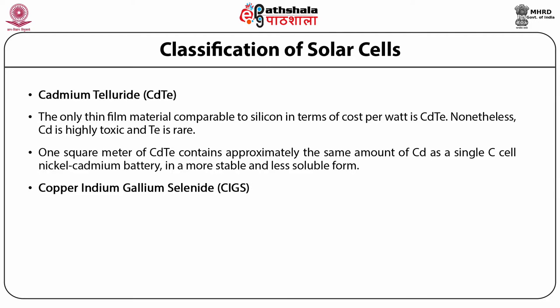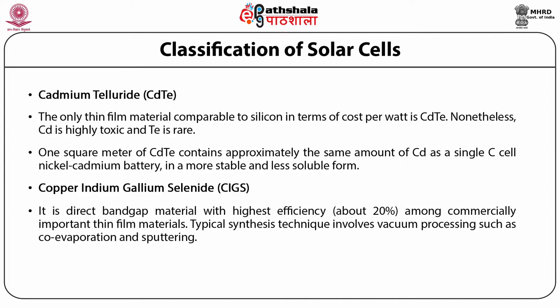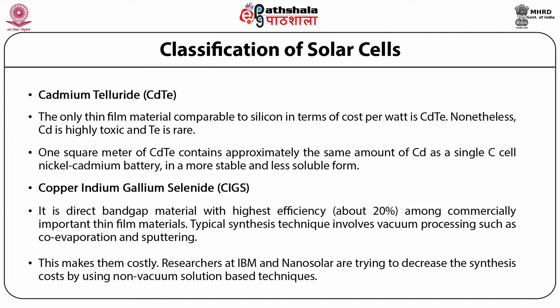Copper indium gallium selenide (CIGS) is another material used for solar cell development. It is a direct band gap material with the highest efficiency, about 20%, among commercially important thin film materials. Typical synthesis techniques involve vacuum processing such as co-evaporation and sputtering, which makes them costly. Researchers at IBM and Nanosolar are trying to decrease synthesis cost by using non-vacuum solution-based techniques.